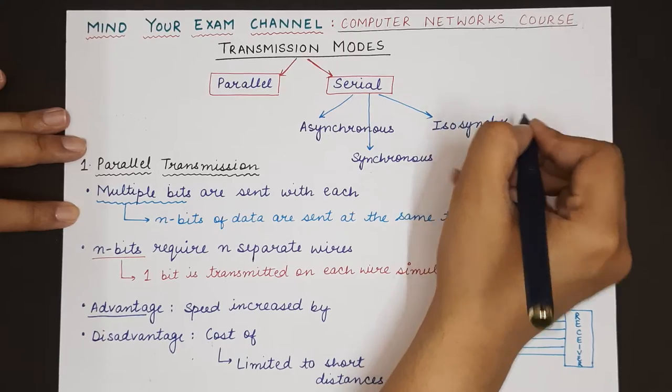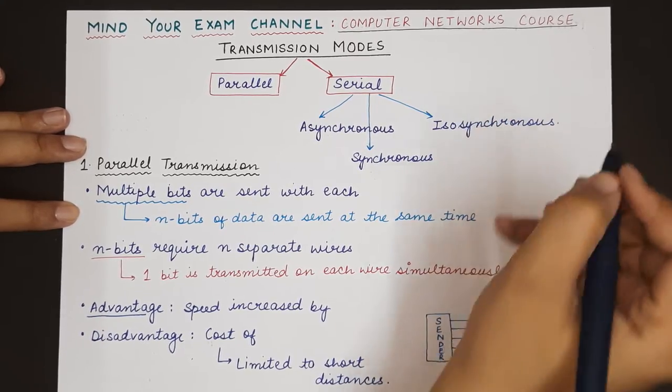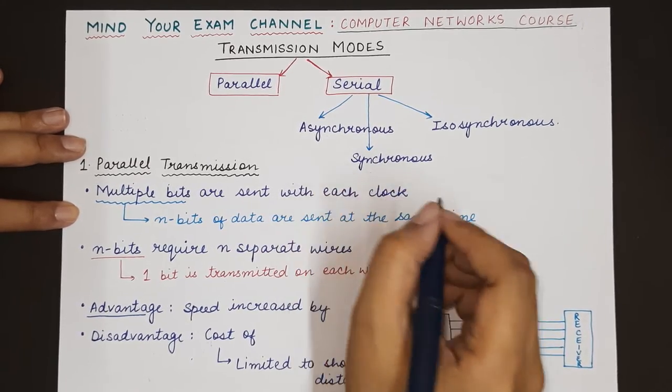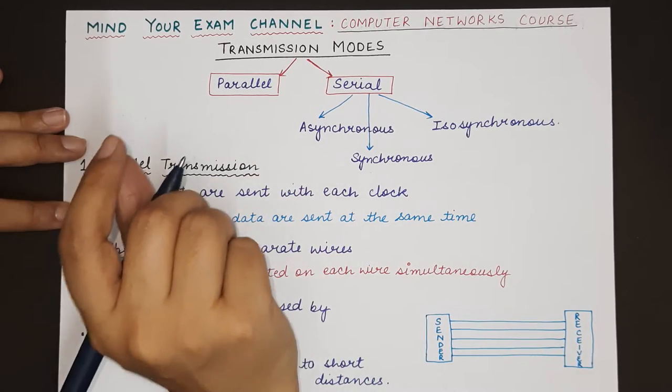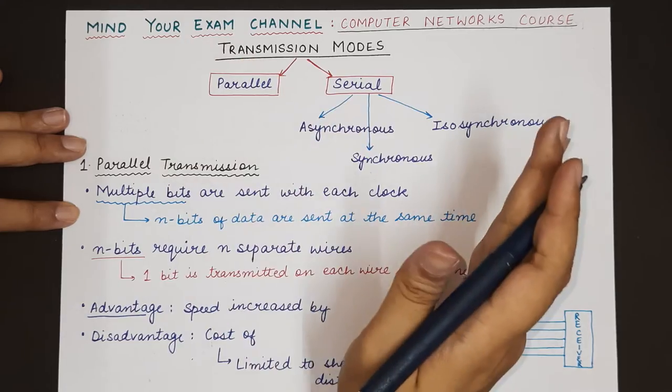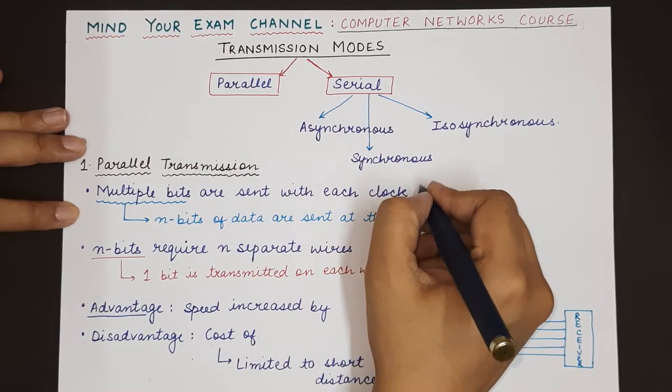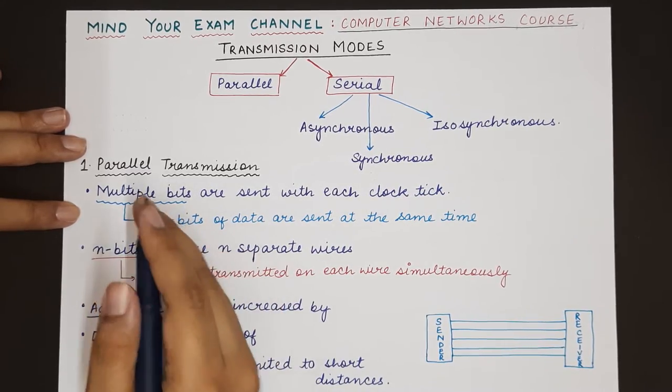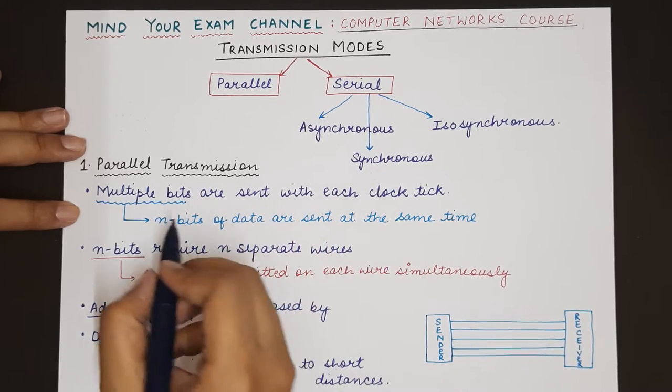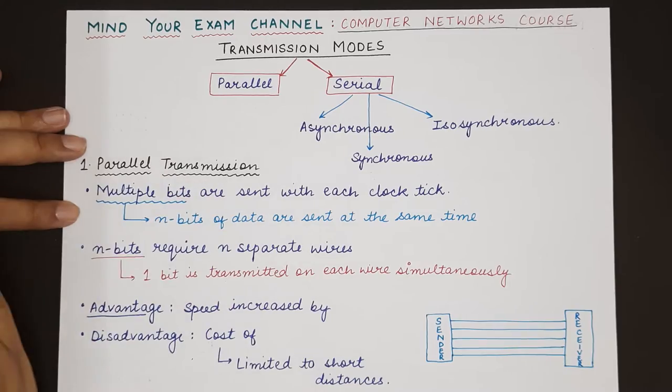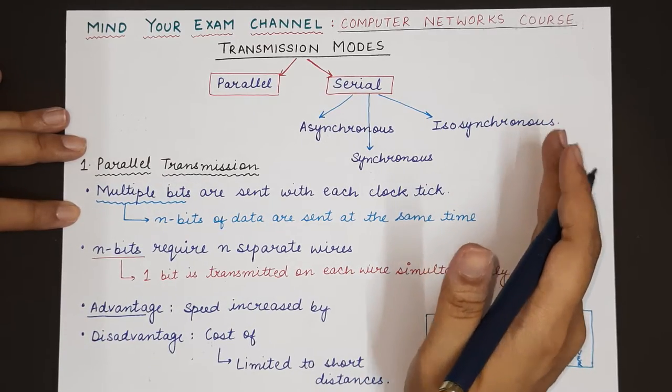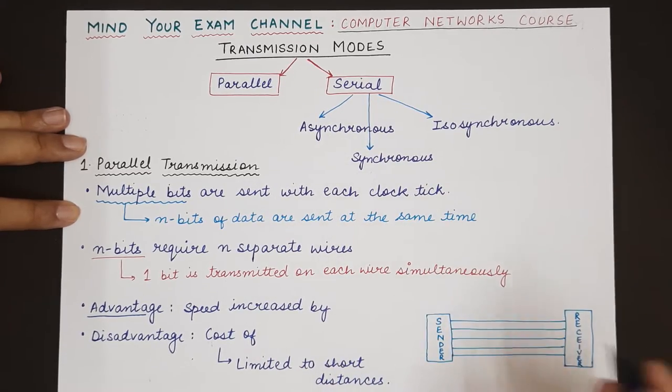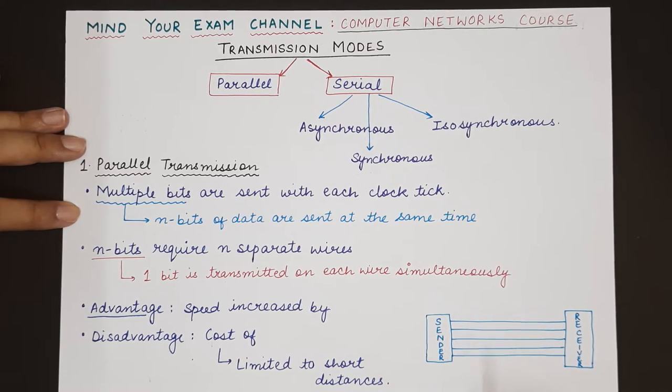Parallel transmission mode basically means that multiple bits are sent with each clock tick. That means whenever the sender is sending some data, multiple bits will be sent at the same time. If there are n number of bits being transmitted, then each of these n bits will be sent at the same instant so that they reach the receiver also at the same instant.